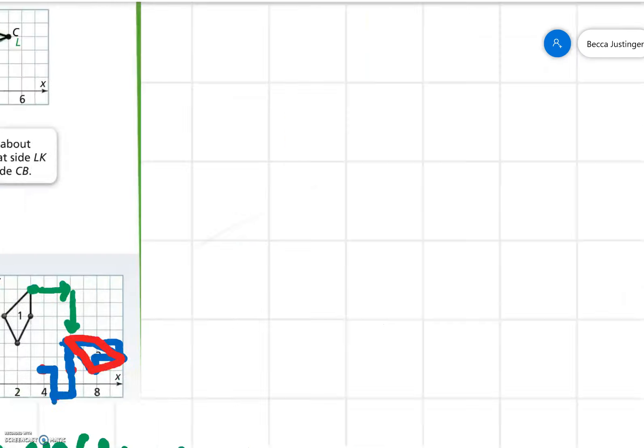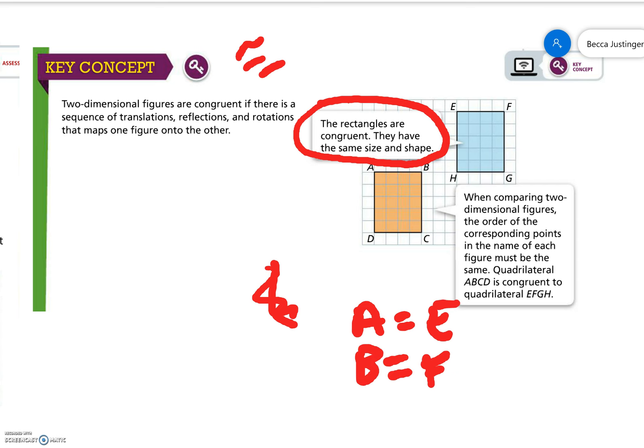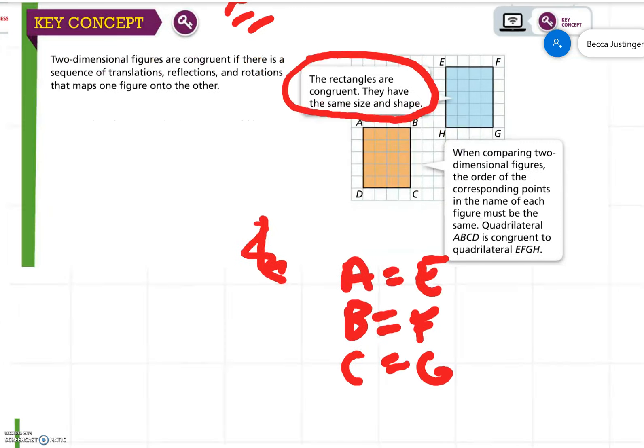Key concept. Two-dimensional figures are congruent. Remember, this is a symbol for congruent. If there is a sequence of translations, reflections, and rotations that maps one figure onto the other. These rectangles are congruent. They have the same size and shape. When comparing two-dimensional figures, the order of corresponding points in the name of each figure must be the same. Quadrilateral ABCD is congruent to quadrilateral EFGH. That means A should map onto E. B should map onto F. C onto G. And D onto H. So that order matters.